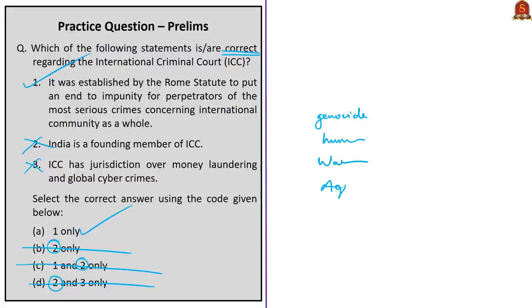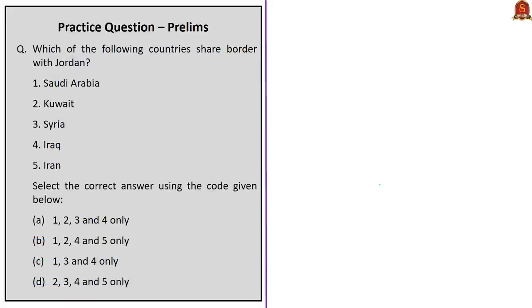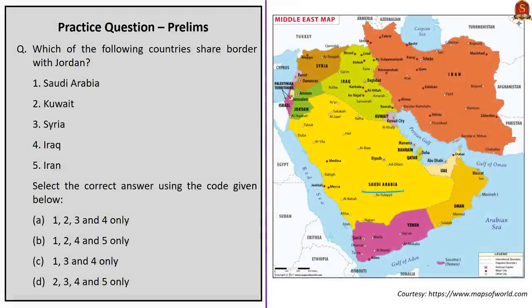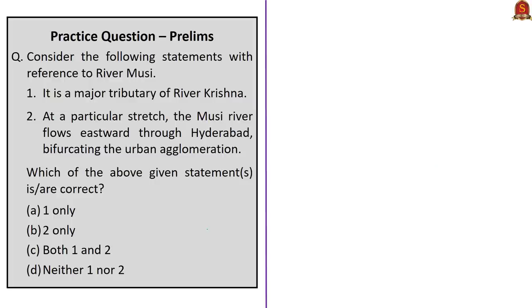Question three asks which countries share a border with Jordan from the options: Saudi Arabia, Kuwait, Syria, Iraq, and Iran. Kuwait and Iran do not share a border with Jordan, so the correct answer is option C. Question four concerns River Musi, with two statements: it is a major tributary of River Krishna — correct; and at a particular stretch the Musi River flows eastward through Hyderabad, bifurcating the urban agglomeration — also correct.